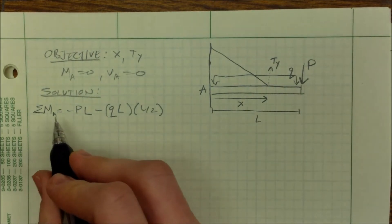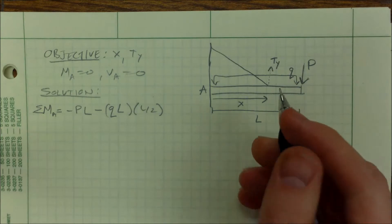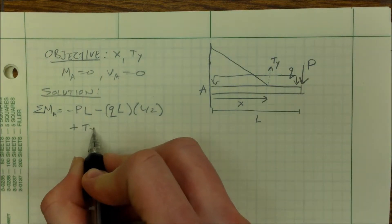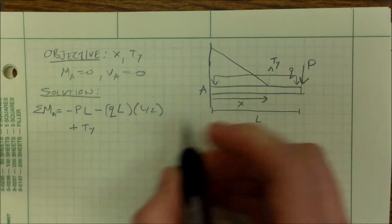TY eventually is going to have to compensate for these two forces, and it's obviously positive. Its moment arm is just X.